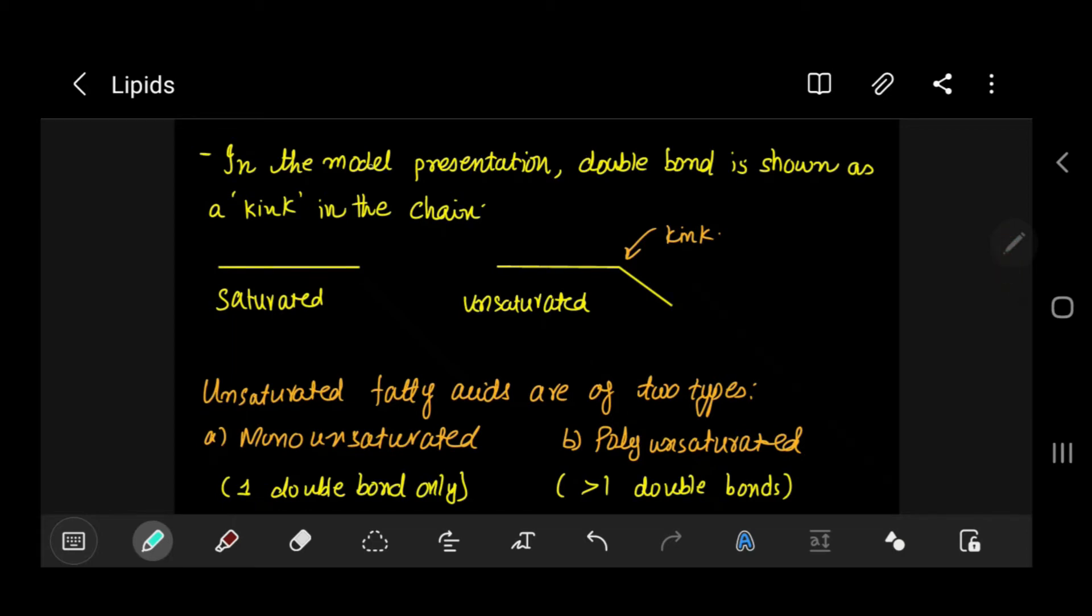Now let's talk about the displaying of these in the model presentation. In a model presentation, a double bond is shown as a kink in the chain. Since in saturated we have all single bonds, we don't need a kink. But in unsaturated, we have carbon-carbon double bonds, so whenever we have a carbon-carbon double bond we display this using a kink.